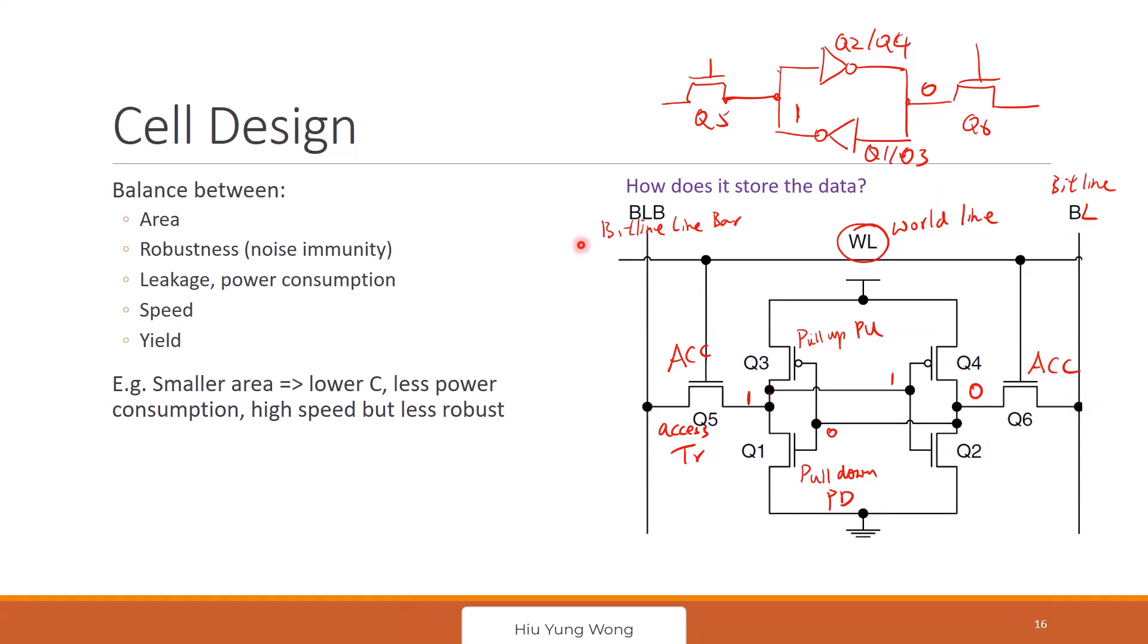Now you see that again, the whole thing, what we want to do is reduce the area, so you can put more SRAM. Reduce the power consumption. But at the same time, you need to make it robust to noise because I don't want to flip the data. And also, I want to increase the speed. But even all of these are good, you need to make sure that it works so the yield is very important. For example, if you have a small area, you have less capacity, you have less power consumption, higher speed, but it also means that it's less robust.